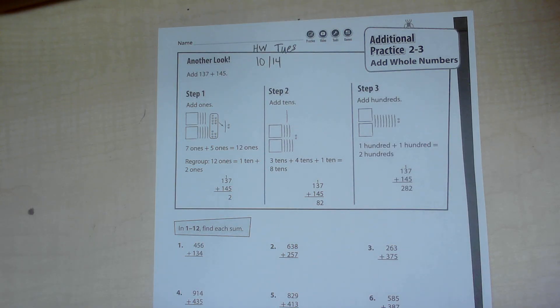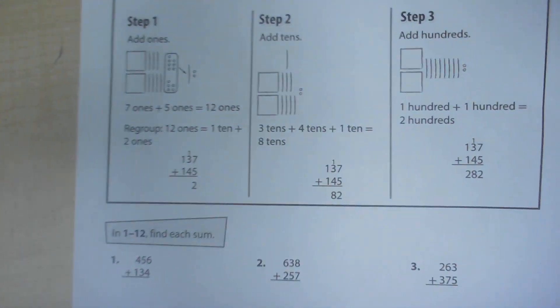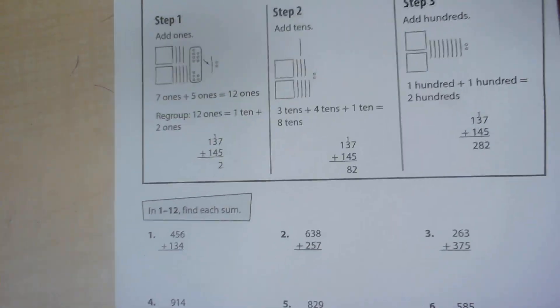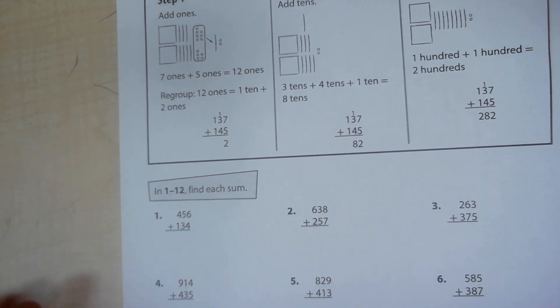One of the things you want to pay attention to is to figure out how many of each place you have to determine if you need to regroup or not. The other strategy is adding by place. I will demonstrate both.